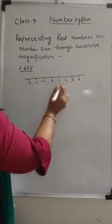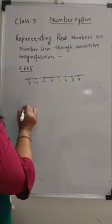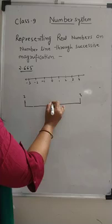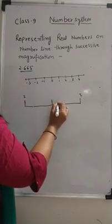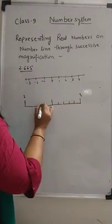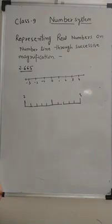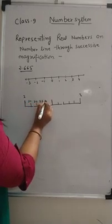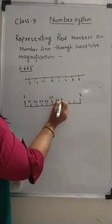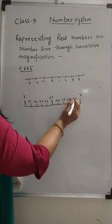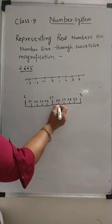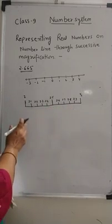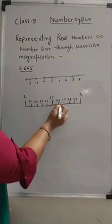Now we consider only this interval between 2 and 3, and divide it into 10 equal parts. If we take a magnifying glass and focus on this portion between 2 and 3, you will find that this number 2.665 will lie between 2.6 and 2.7.